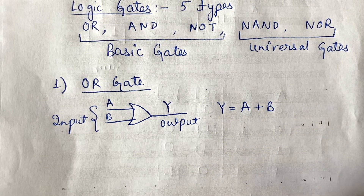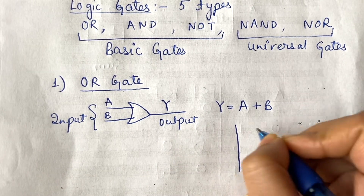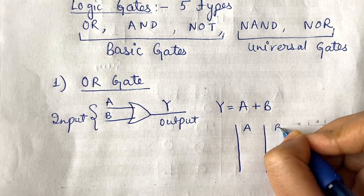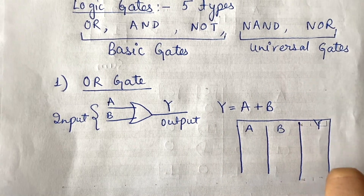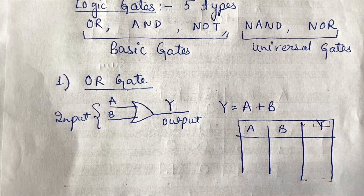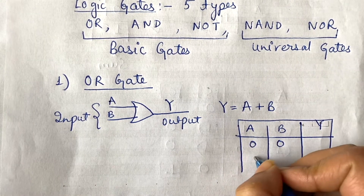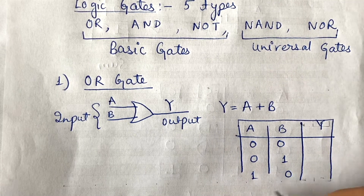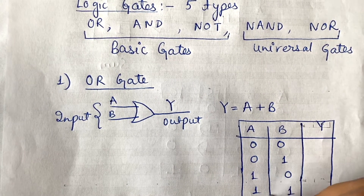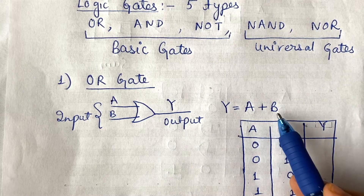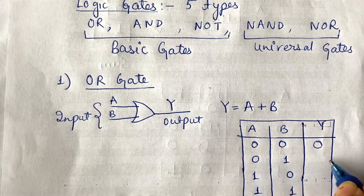Now we will check the truth table of the OR gate. We have two inputs A and B, and the output we will get on Y. With two bits we can get four combinations: 0-0, 0-1, 1-0, and 1-1. The OR gate performs addition, so the outputs are: 0 plus 0 is 0, 0 plus 1 is 1.